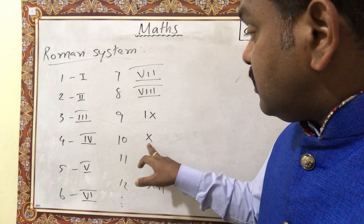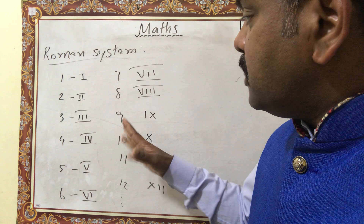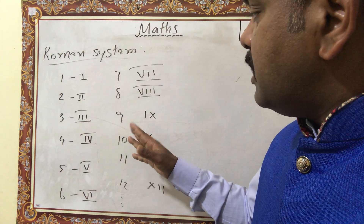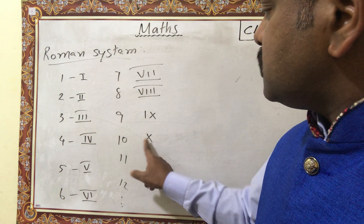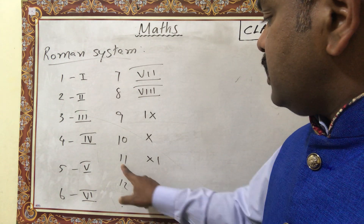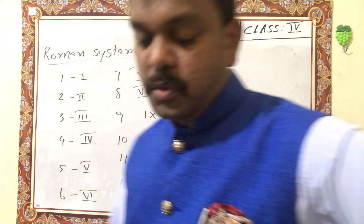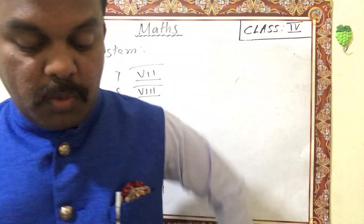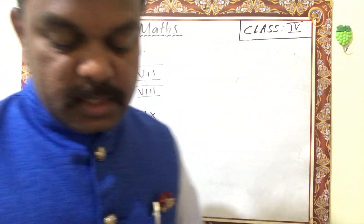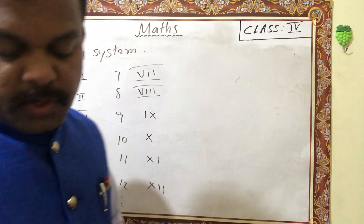For 9: there is no dedicated symbol, so it is 10 minus 1, written as IX — I on the left side. Then 10 is X, 11 is XI, 12 is XII, and so on. If you look at your book, you will understand everything.